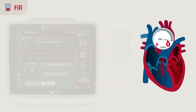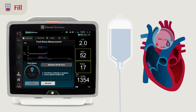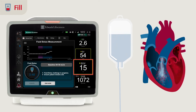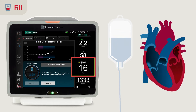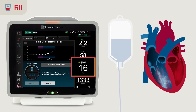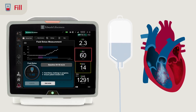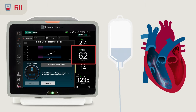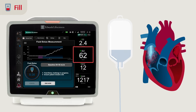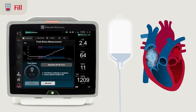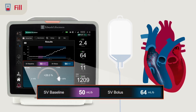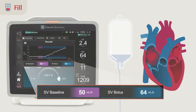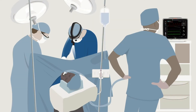Acumen HPI software provides several variables to understand fluid responsiveness, including stroke volume variation for ventilated patients in a regular RR rhythm, and also stroke volume. Stroke volume can be assessed in response to fluid challenge or via a passive leg raise, and can be used in conditions in which SVV experiences limitations.